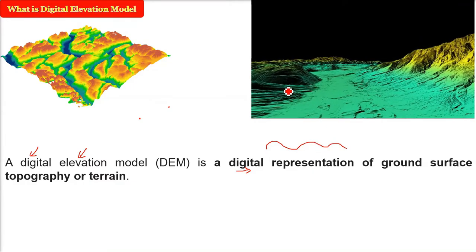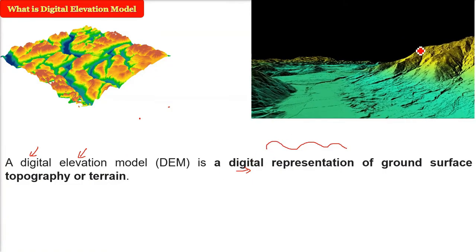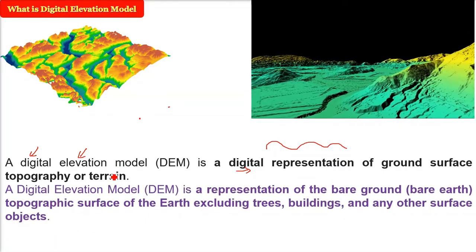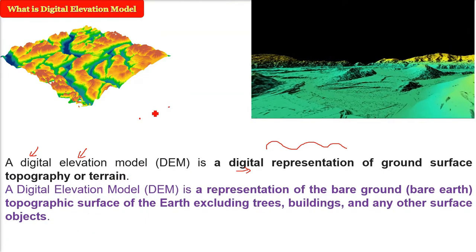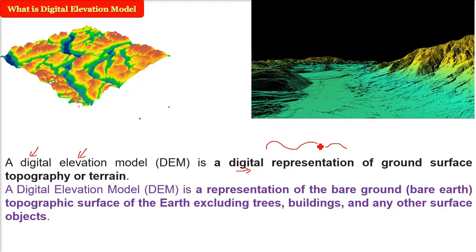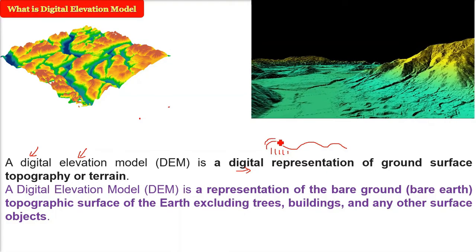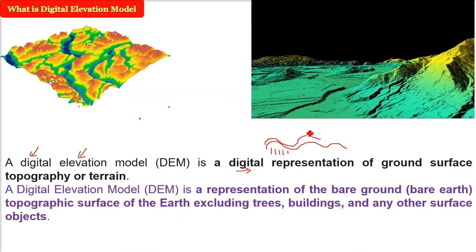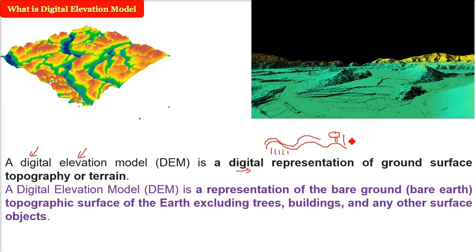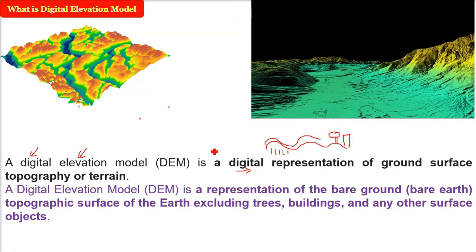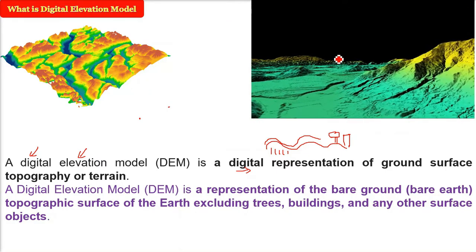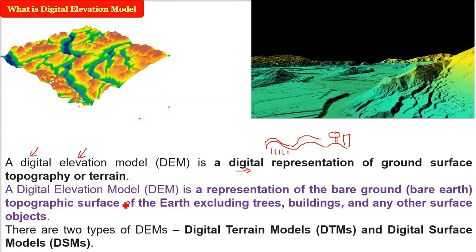Whatever you see naturally or geographically, if you are able to represent it realistically in a certain manner, that is called DEM. A digital elevation model is a representation of the bare ground — bare earth. Our earth consists of trees, man-made objects, and natural objects, but DEM refers to just the bare ground with nothing else over it.